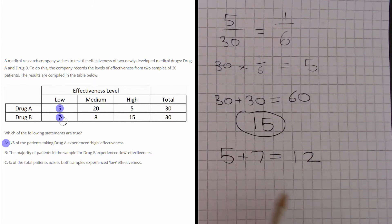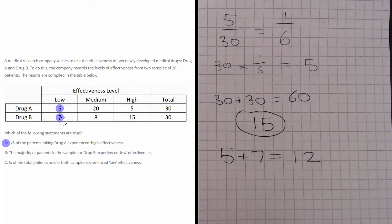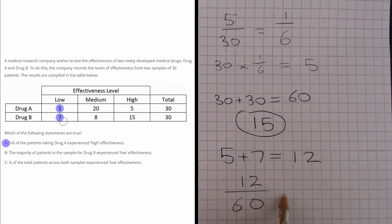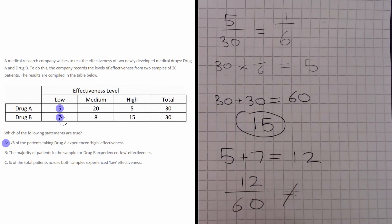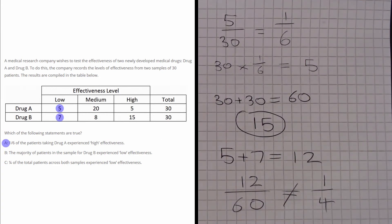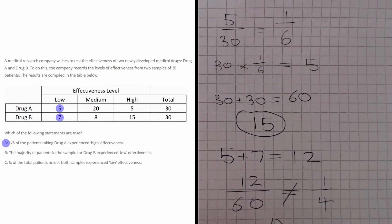Again, we could approach this question in a similar way to Part A and say we have 12 people out of a total of 60, which does not equal a quarter. So the answer for this question is A.